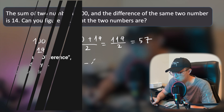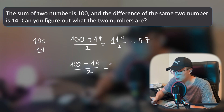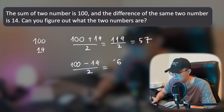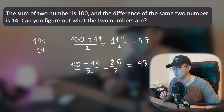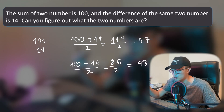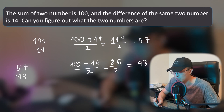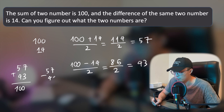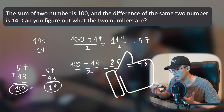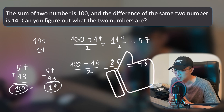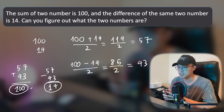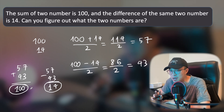To find the smaller number: 100 minus 14 equals 86, and divide by two gives you 43. Now let's verify — 57 and 43 are the two original numbers. Add them together: 57 plus 43 equals 100. And their difference: 57 minus 43 equals 14. The sum is 100 and the difference is 14, which matches the question. This is one way you can find the original numbers from their sum and difference.